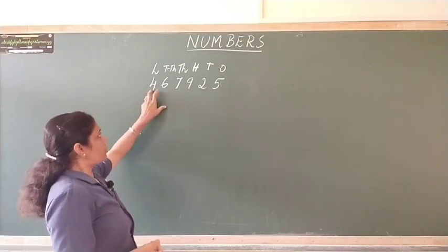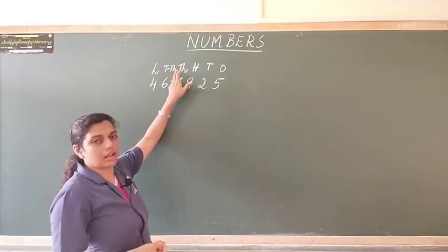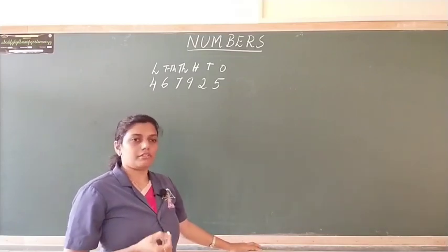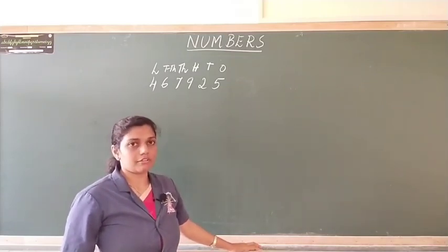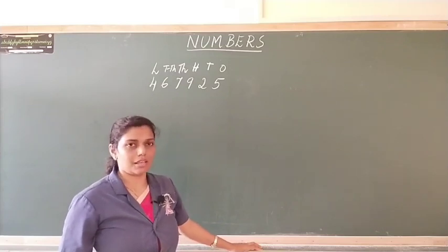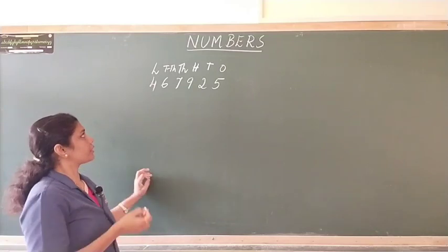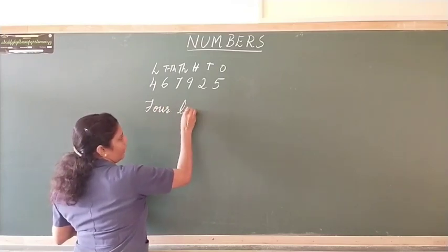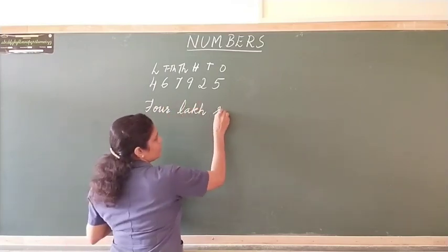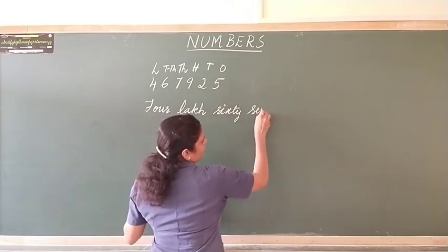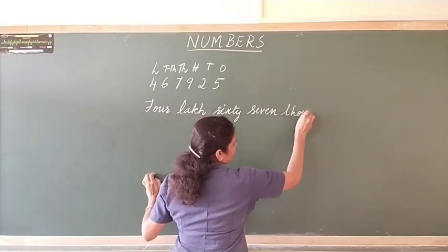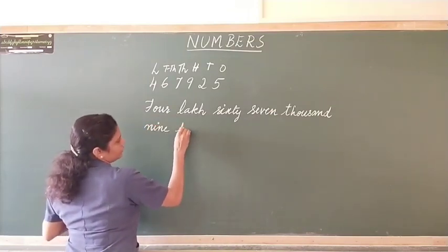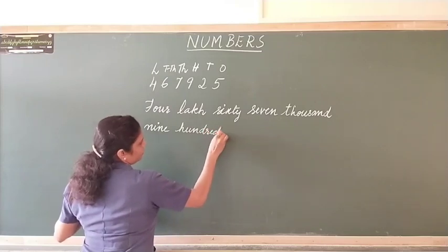I repeat, 4,67,925. The way we read a number, we can also write it in words. That is, we are writing the number in its number name. So, let us write the number name of this number.